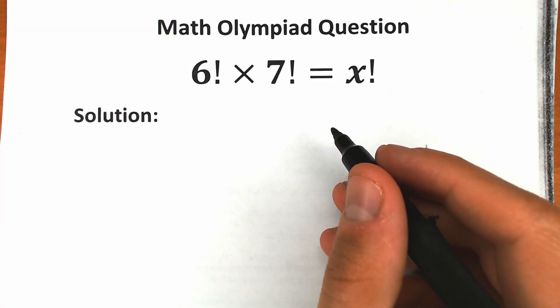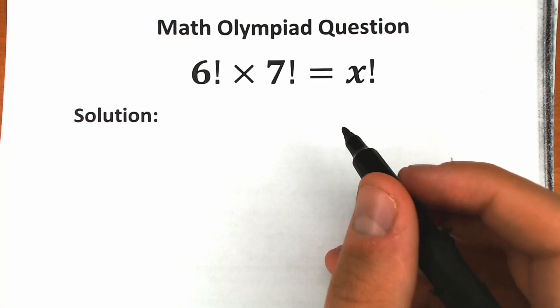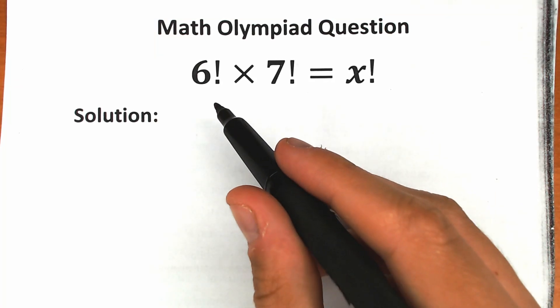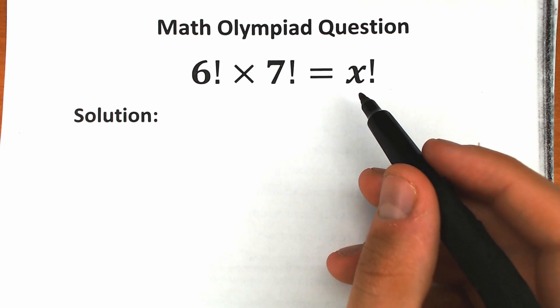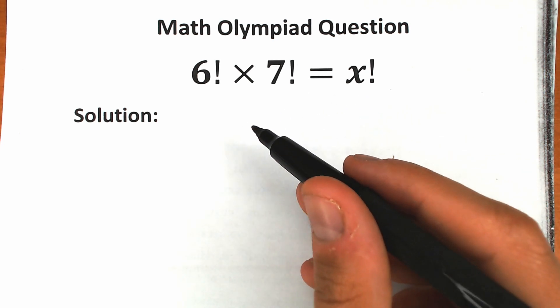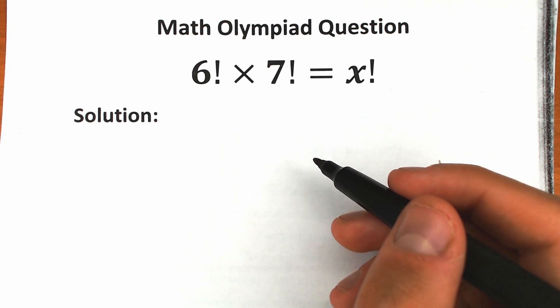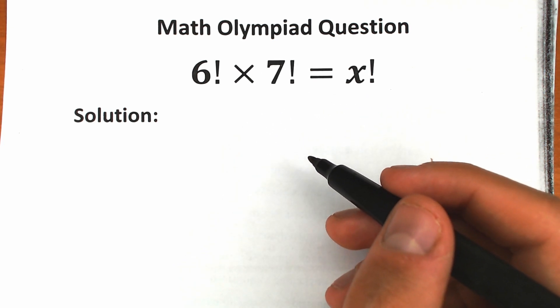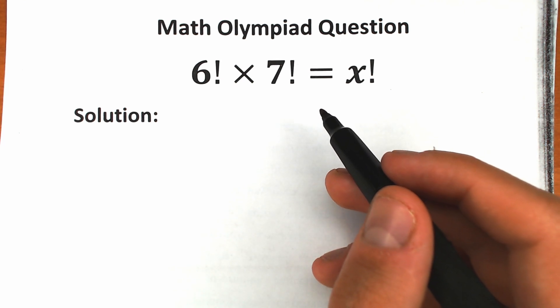Happy to see you here on my channel MathMode, and we have a really interesting challenge today: 6 factorial times 7 factorial equals x factorial. In this video I'm going to fully explain how we can solve this challenge.